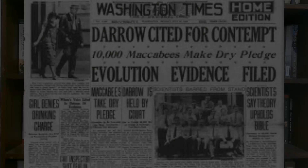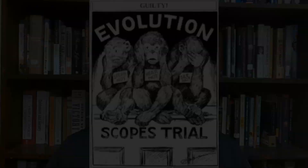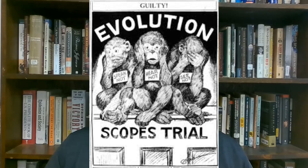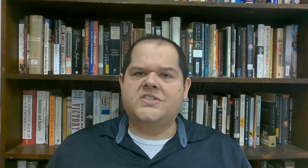Representing Mr. Scopes and the American Civil Liberties Union was the famed Clarence Darrow, often seen as one of the greatest defense attorneys in American legal history. The trial publicized the fundamentalist-modernist controversy, setting modernists — who said evolution was not inconsistent with religion — against fundamentalists — who said the word of God as revealed in the Bible took priority over all human knowledge. Scopes was found guilty and received a $100 fine.